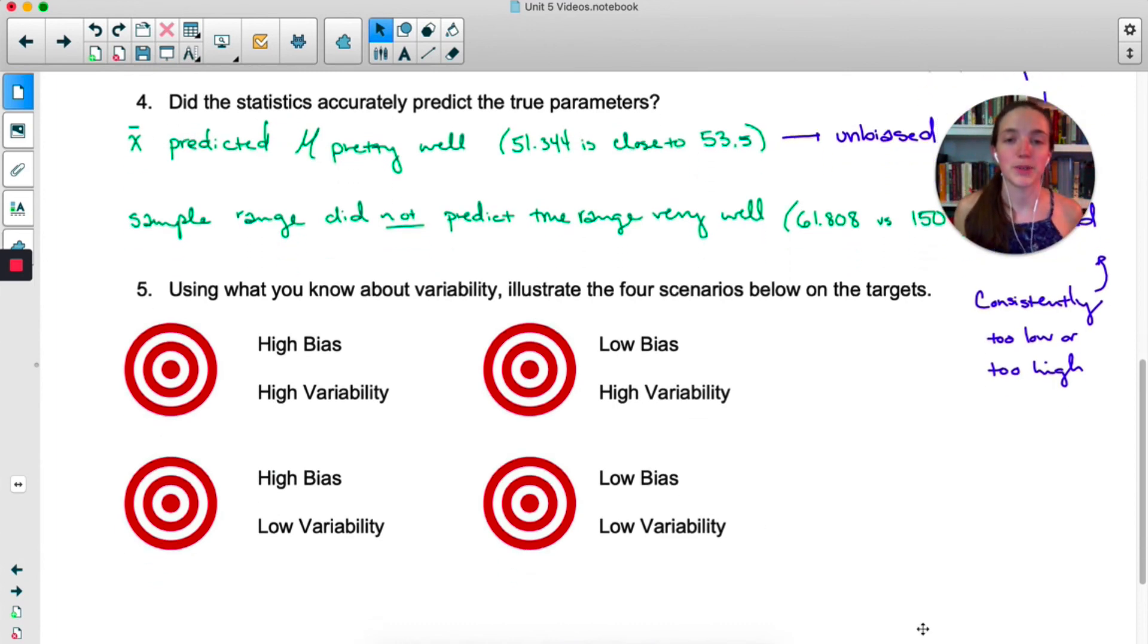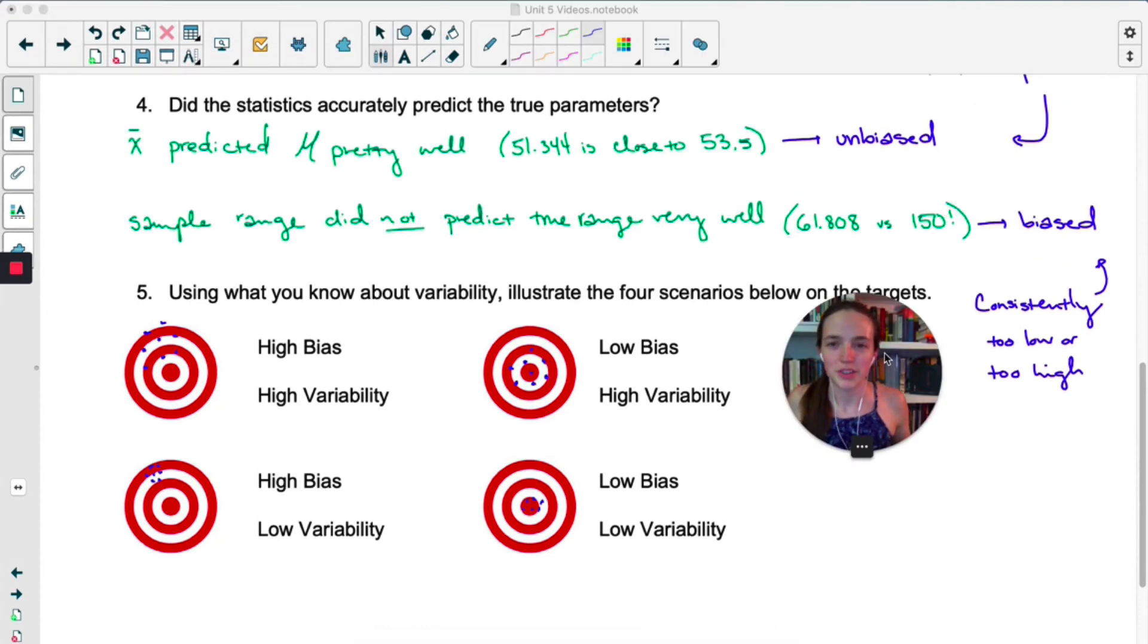Using what you know about variability, illustrate the four scenarios below on the targets. So pause the video and take a moment to try that on your own. For some reason bias and variability always get mixed up, so I think it's worth it just to look at these examples. When you have high bias, which is both of these targets on the left, you'll notice that the points are consistently not where they're supposed to be. On the right, we have low bias, and you can see that the points are consistently where they're supposed to be around the target. So bias describes if the estimate is consistently correct or consistently too high or too low.